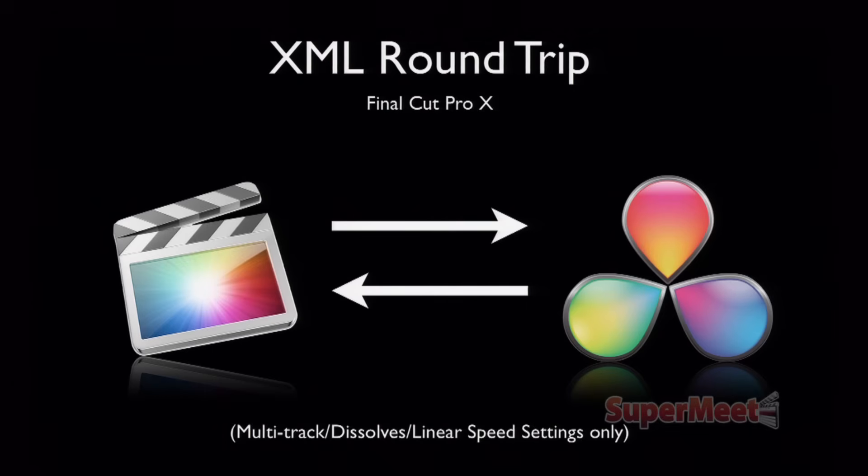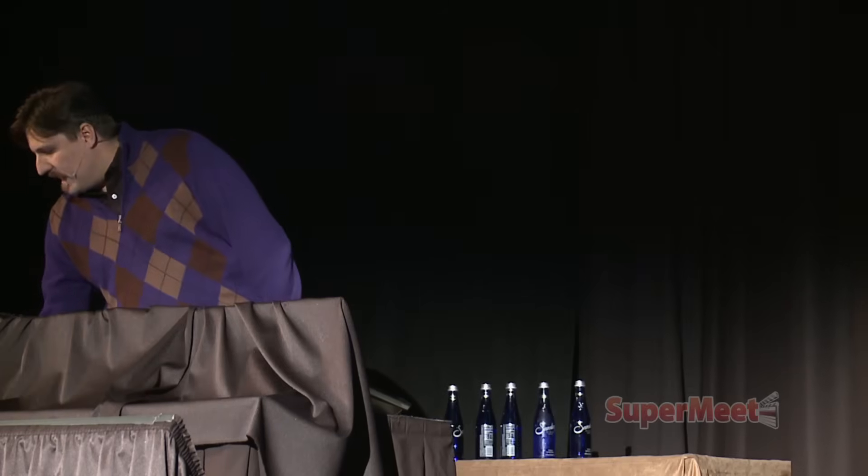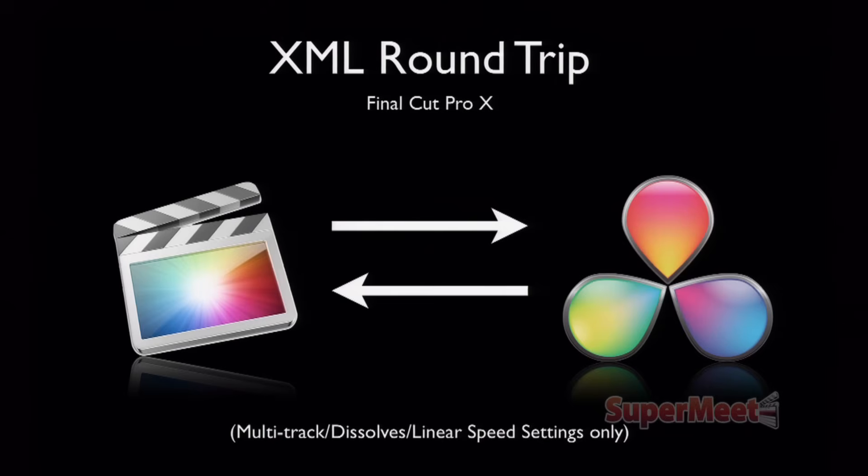8.1 also introduces a round-trip for Final Cut Pro 10. I have to give props to Matthew Murano — he's ilovehugh on Twitter. He first discovered you can import Final Cut Pro 7 XML and export Final Cut Pro 10 XML. You can do this with the free light version of DaVinci Resolve. It doesn't do audio, only video, but it gives you a basic ability to upgrade the visual elements of your project. It's Switzerland — you can come in and go out any way you want.